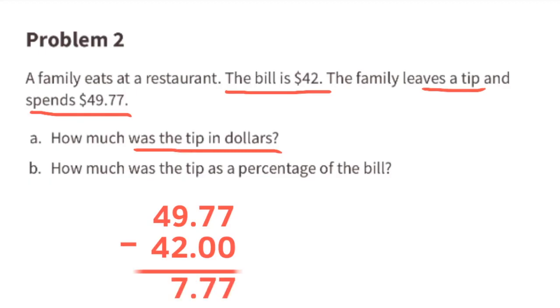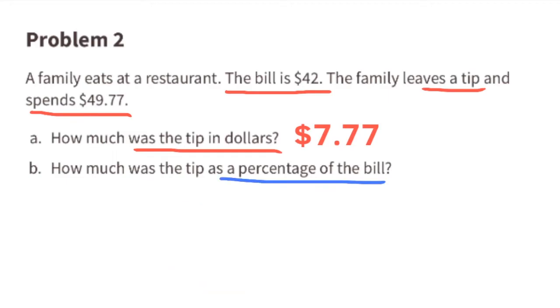Part b: How much was the tip as a percentage of the bill? That's like saying 7.77 is what percent of 42, and we can find that out by dividing 7.77 by 42, which equals 0.185. As a percentage, this would be written as 18.5%. The tip was 18.5% of the bill.